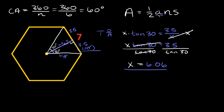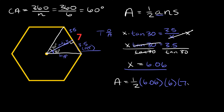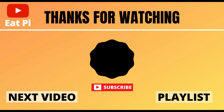Now we plug into our formula: total area equals one half times the apothem 6.06, times the number of sides 6, times the side length 7. This gives a total area of approximately 127.31 units squared. If you found the video helpful, make sure to leave a thumbs up below, and if you have any questions let me know in the comments.